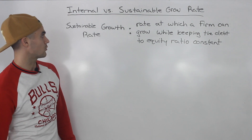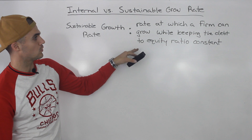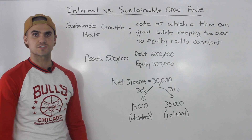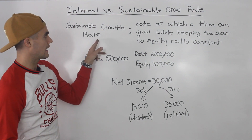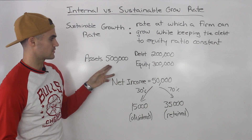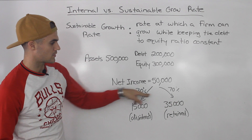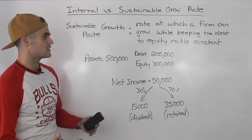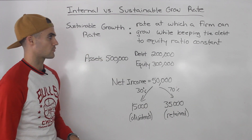Next up is the sustainable growth rate. The sustainable growth rate is the rate at which a firm can grow while keeping the debt-to-equity ratio constant. I'm going to show how this works through the same example, with the same balance sheet, net income, payout ratio, and retention ratio — so you can clearly see the difference between the internal growth rate and the sustainable growth rate.